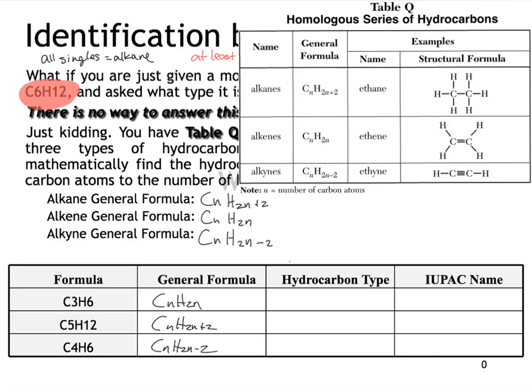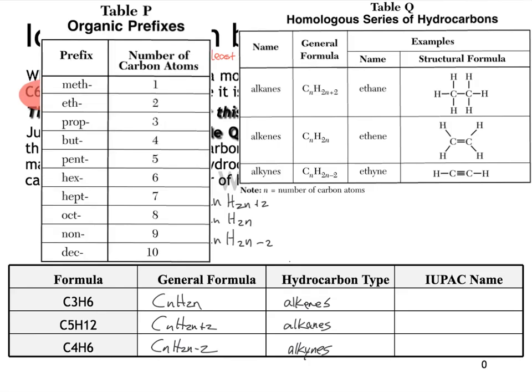So the hydrocarbons that have the formula CnH2n are all called alkenes. CnH2n plus 2, those are all called alkanes. And CnH2n minus 2, those are all called alkynes. That's all information that's freely available on Table Q. And the IUPAC names are going to be based on the number of carbons as well as the family name. So I brought up Table P here to help us out. In the first example, we have three carbons. So we're going to use a prop prefix. And the suffix is going to be ene. So best answer is propene. For the next one, we're starting out with five carbons. So our prefix is going to be pent. And the family name is alkane. So we're going to end this one in the suffix ane, pentane. And our last example has four carbons. So the prefix is but. And it belongs to the alkyne family. So we're going to end it in yne.